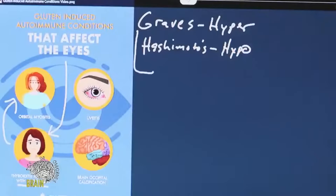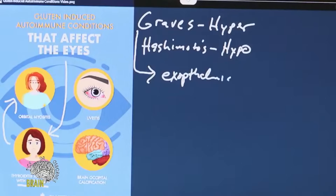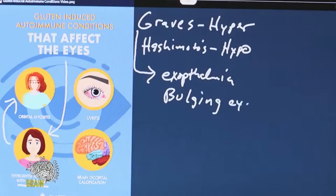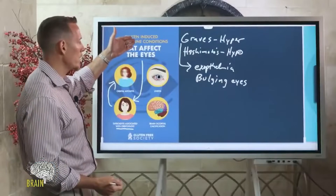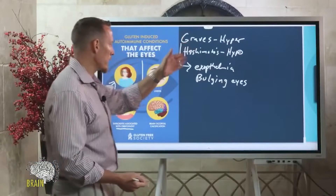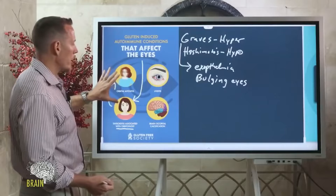You can also get orbitopathy — particularly in Graves' disease, you see what's called exophthalmos, a bulging of the eyes. The eyes bulge out almost like a frog's eyes, and this is a hallmark or classic symptom of Graves' disease. If that's happening to you and you've had that diagnosis, this is one of the ways gluten can induce an autoimmune condition that impacts your vision and your eyes.